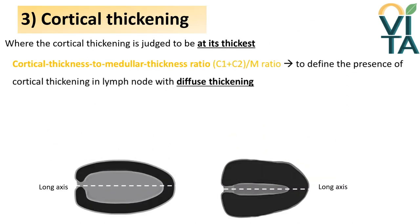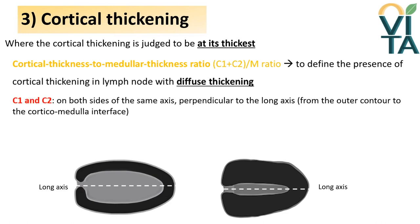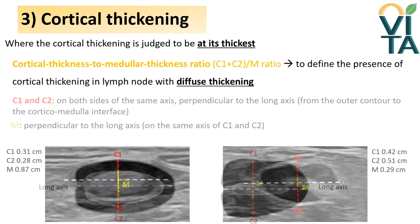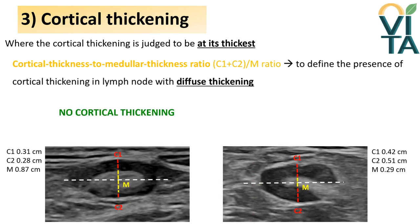Diffuse cortical thickening is defined by the ratio between cortical thickness and medullar thickness, so it is necessary to have a medulla as a reference structure. The measurements are taken at the widest point of cortical thickening obtained by scrolling the lymph node. The thickness of the cortex is measured on both sides of the medulla on the same axis, perpendicular to the longer one, from the outer contour to the corticomedullary interface. Absence of cortical thickening is defined when the cortex is thinner than the medulla, with a ratio less than 1.